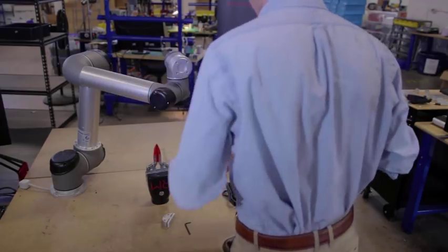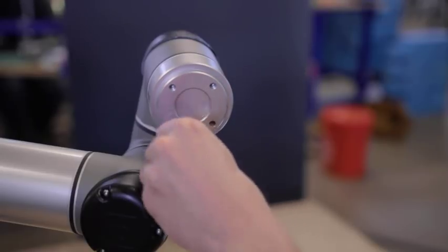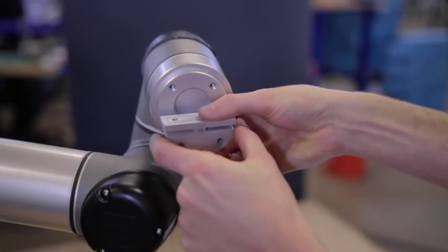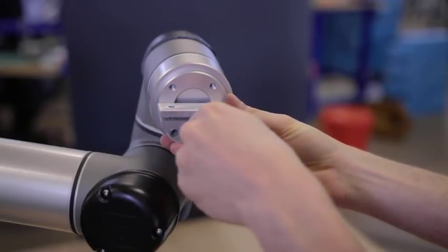Move the robot into a position in which you can comfortably reach its wrist. Use the dowel pin to ensure correct orientation. Attach the mounting plate to the robot's end effector and use two M6 screws to mount the plate.